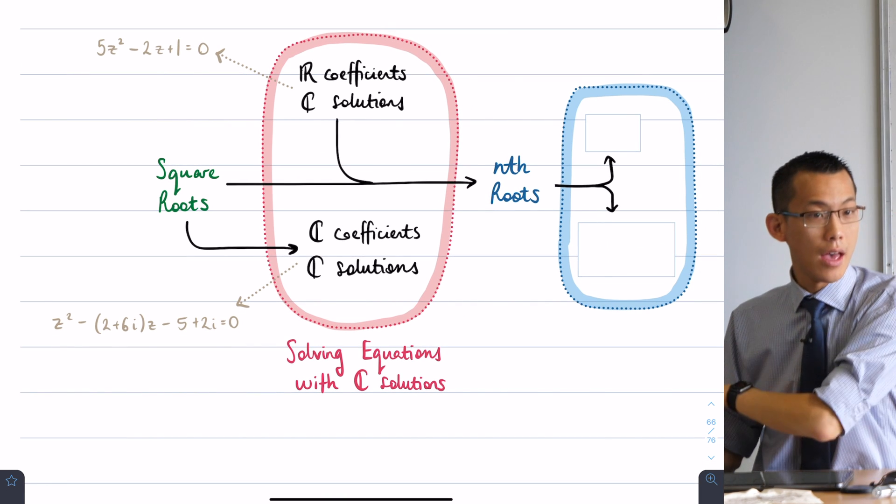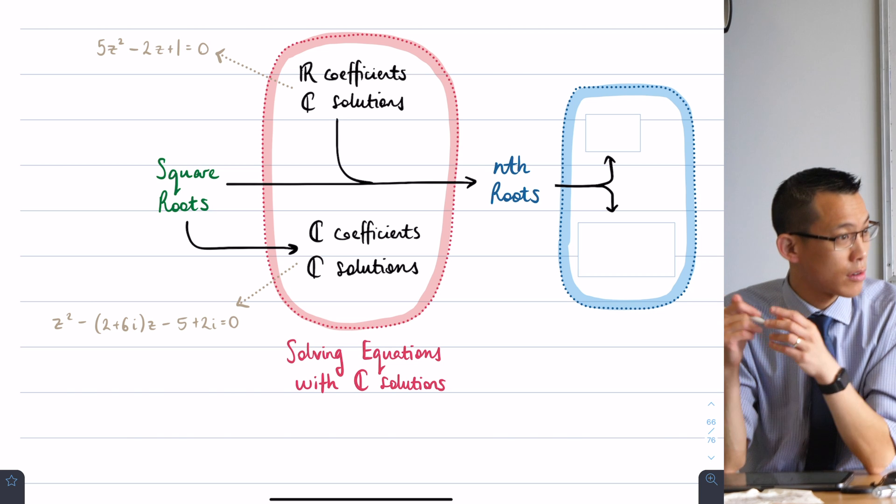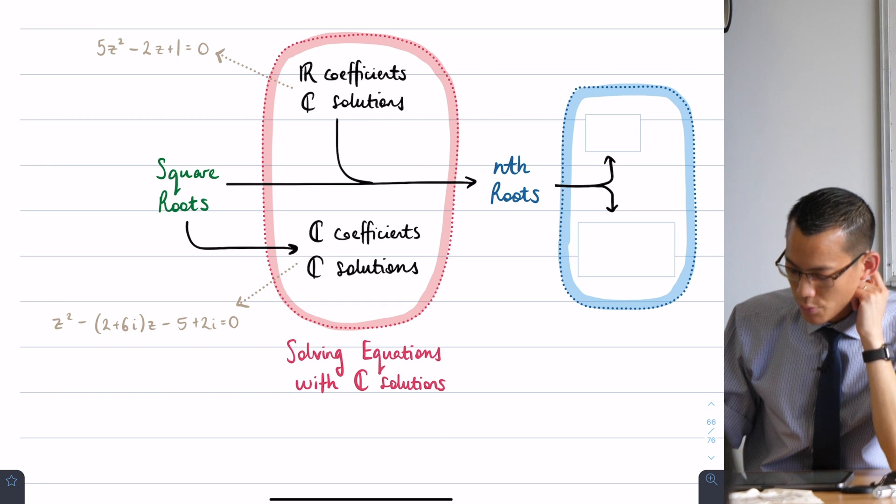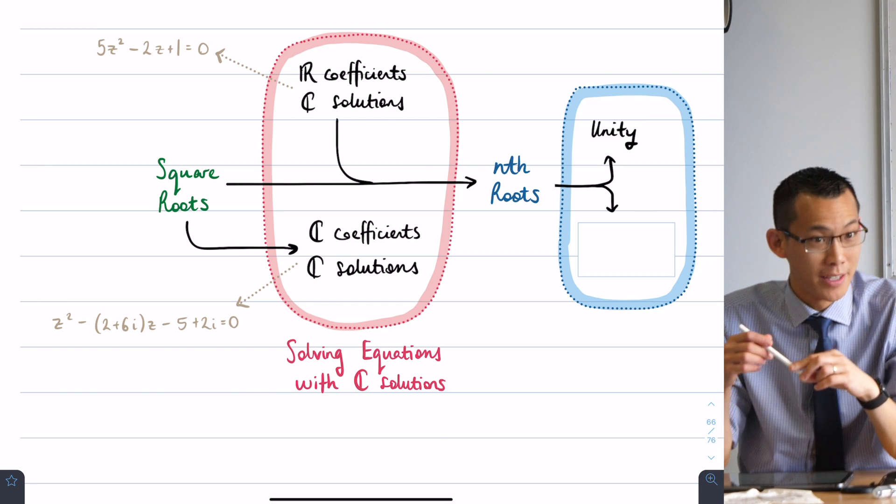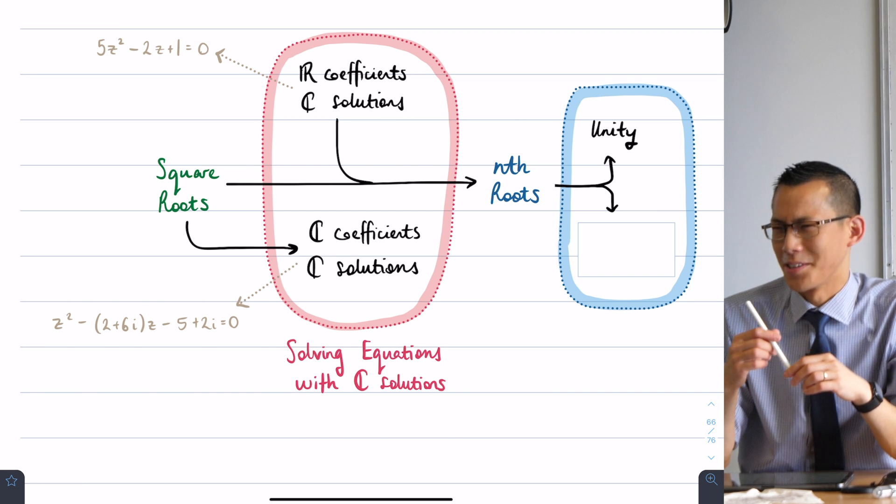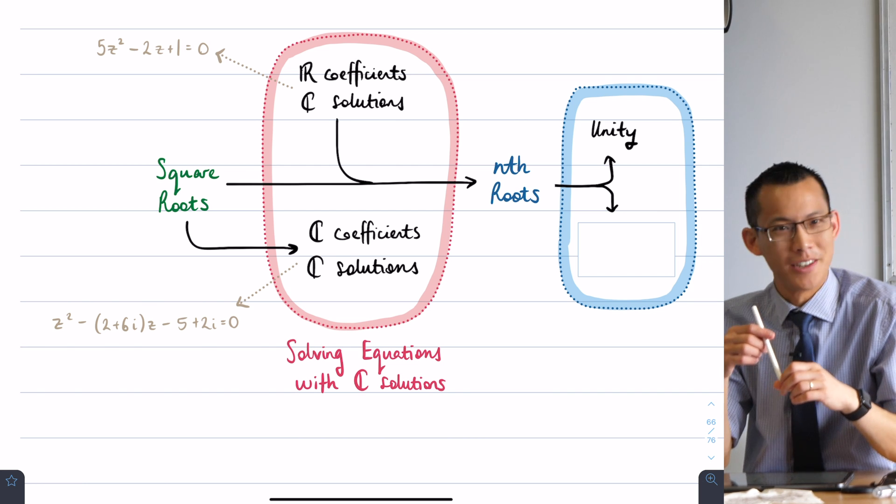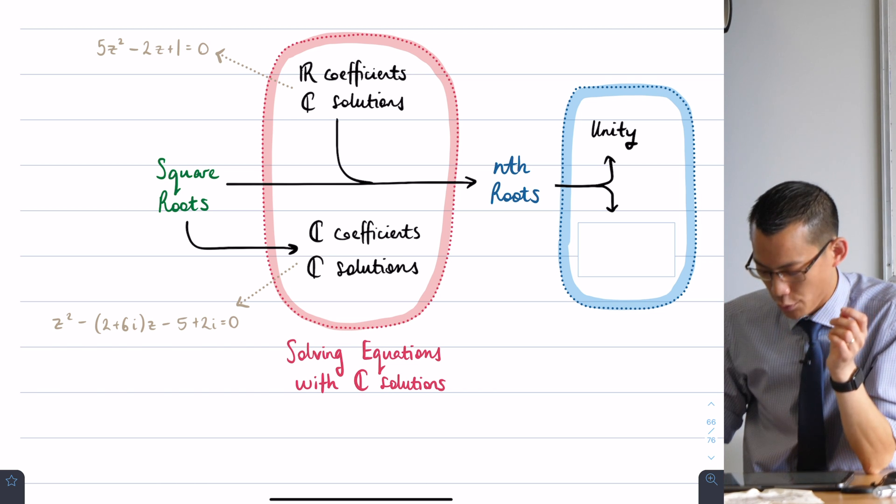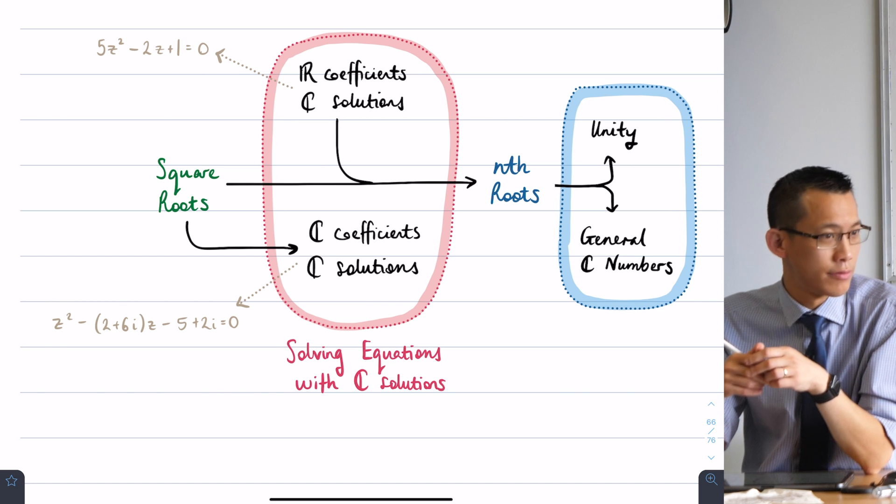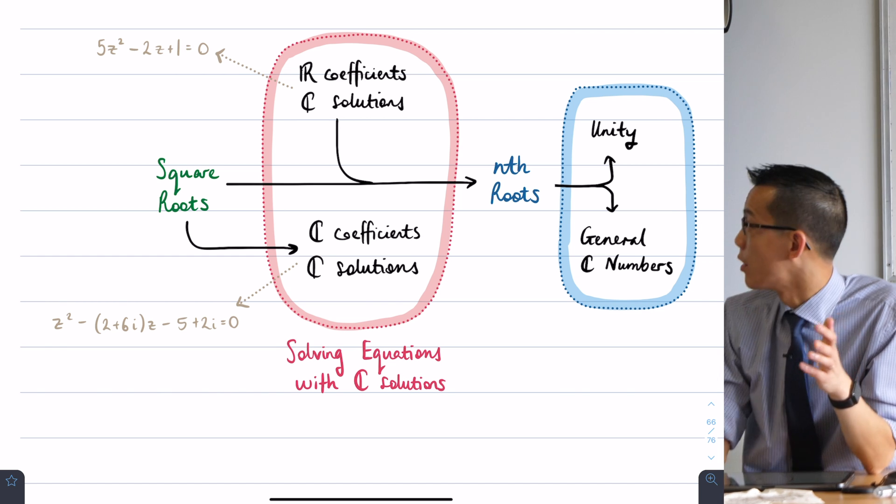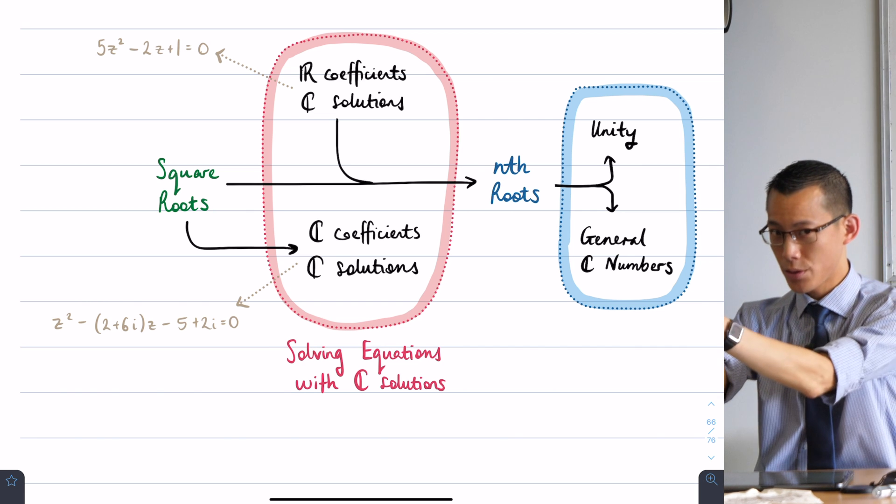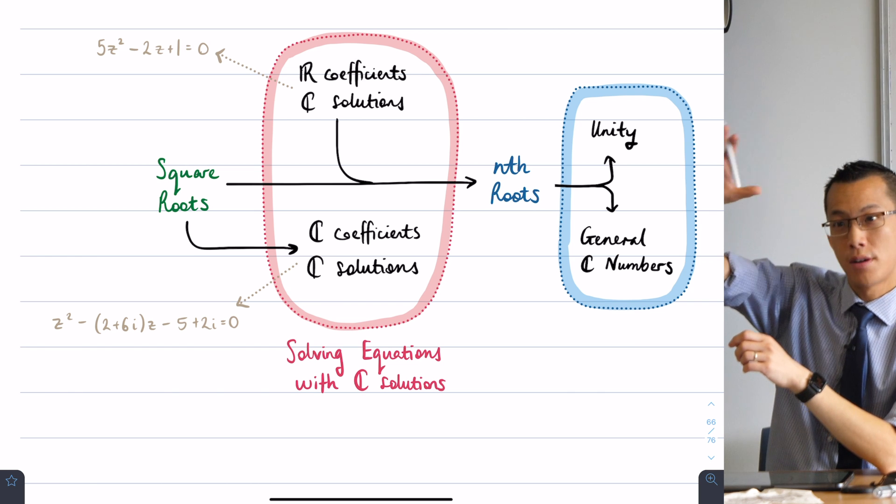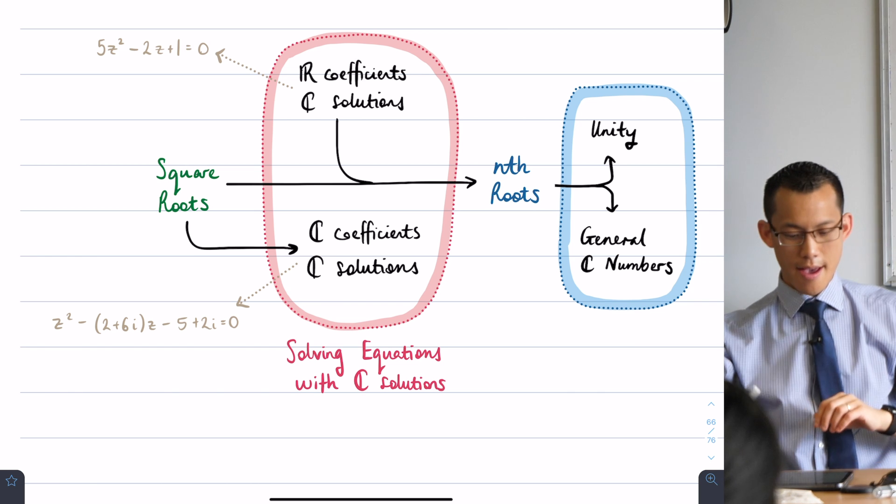Before we leave off, I want to anticipate next week. We're going to focus on nth roots in two halves. First, we're going to look at the nth roots of a special complex number called unity, and then we'll look at the nth roots of any complex number. So we're going from square roots to general nth roots, then from nth roots of this special complex number to any complex number. That's going to be our map for the next little bit.